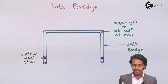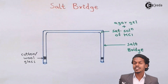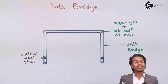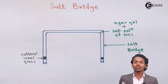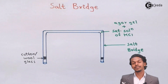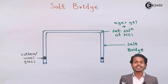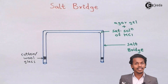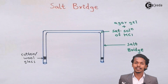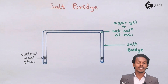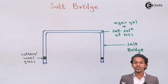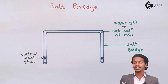Let me tell you what a salt bridge is and why it is used. In a galvanic cell, a salt bridge is used to connect two half cells. In a Daniel cell, there are two half cells: one consisting of a zinc electrode dipped in ZnSO4 solution, and the other consisting of a copper electrode dipped in CuSO4 solution. These two half cells are connected through the salt bridge.